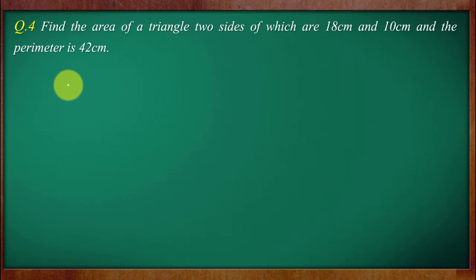So first we assume that a is equal to 18 centimeter, b is equal to 10 centimeters, c we don't know and perimeter given is 2s is equal to 42 centimeters. You know that perimeter is equal to the sum of the lengths of all three sides.